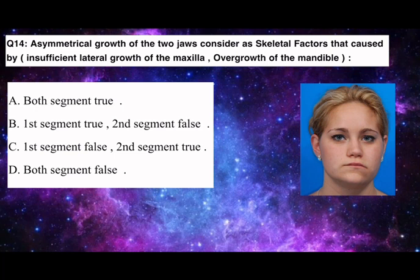Q14. Asymmetrical growth of the two jaws, considered as skeletal factors, caused by insufficient lateral growth of the maxilla and overgrowth of the mandible. A. Both segments true. B. First segment true, second segment false. C. First segment false, second segment true. D. Both segments false.